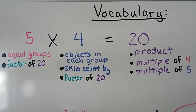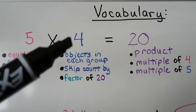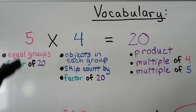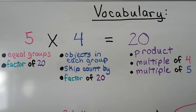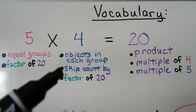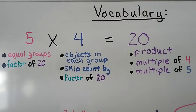In a multiplication number sentence, the first number is the number of equal groups. The second number is the objects in each group. Five is a factor of twenty, and twenty is the answer — the product. The four is what we skip count by, and it's also a factor of twenty. We're going to learn about multiples coming up in this chapter. The four and the five are both multiples of the product twenty.